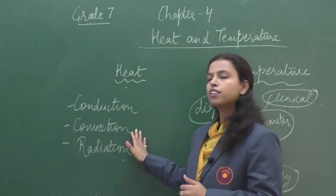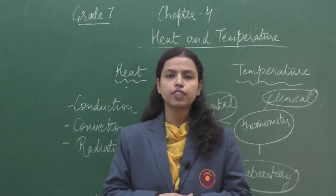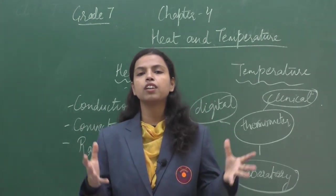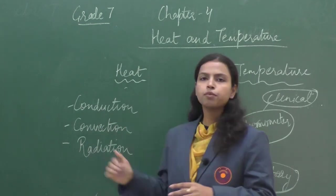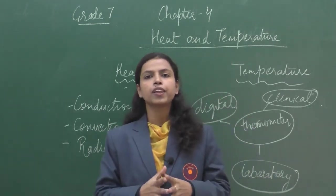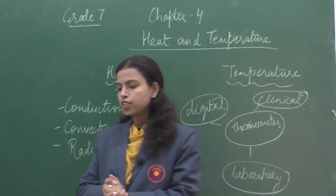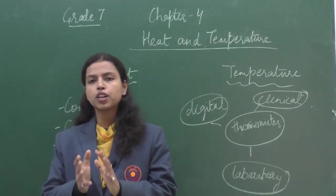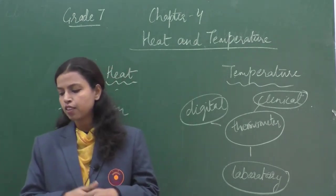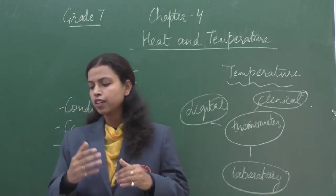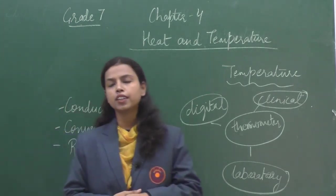Then we have the convection method. As you know, water is a poor conductor of heat and electricity, so through convection we can supply heat in liquids. Now radiation — it is a process to transfer heat energy from a hot body to a cold body. For example, heat reaches us from the sun.